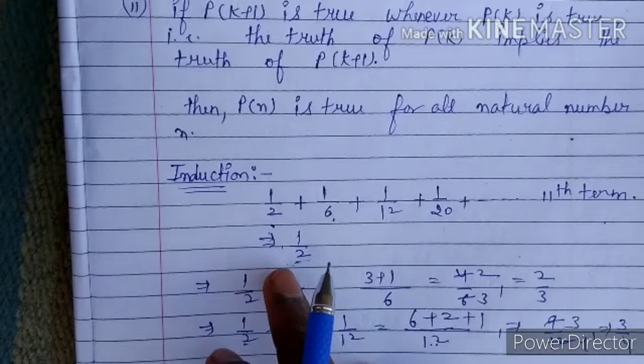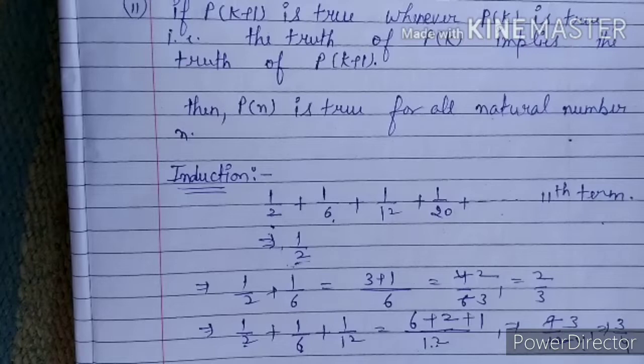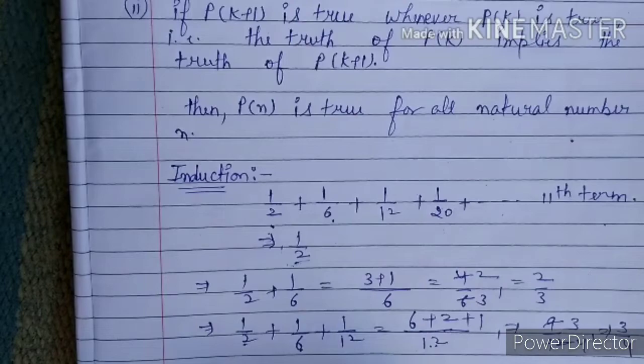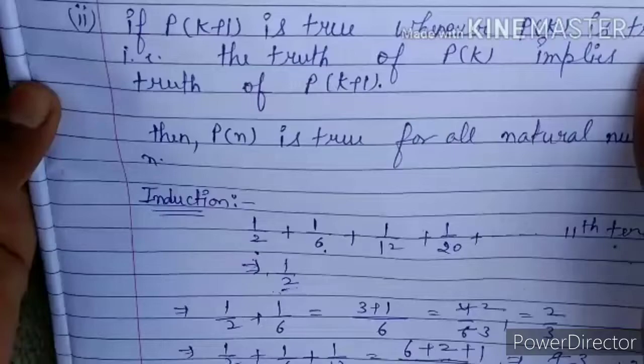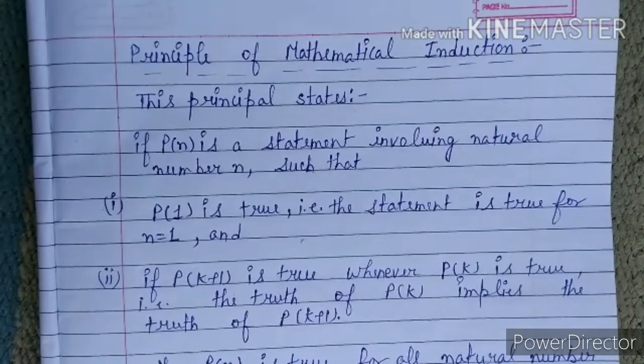We can see that the first partial sum is 1/2, the second is 2/3, the third is 3/4, so the fourth would be 4/5, the sixth would be 6/7, and continuing this pattern, the 11th term is 11/12. This is induction — recognizing a pattern and generalizing it.